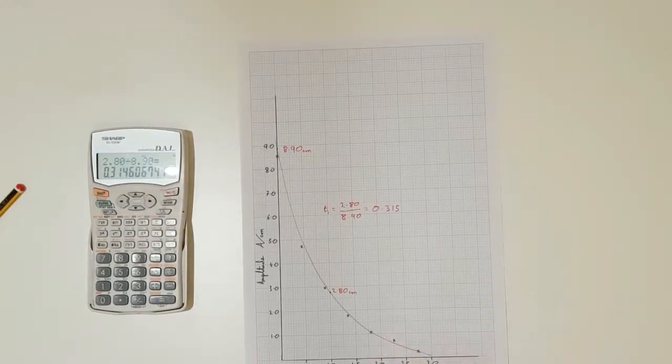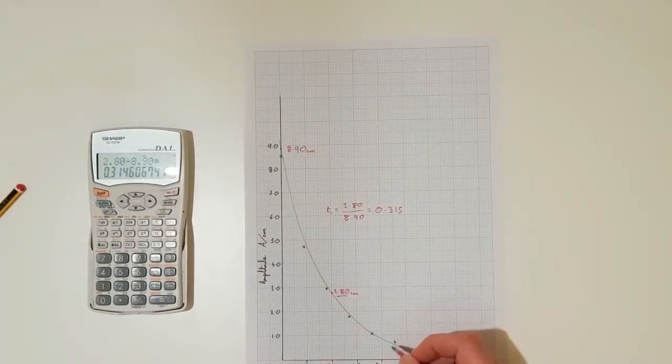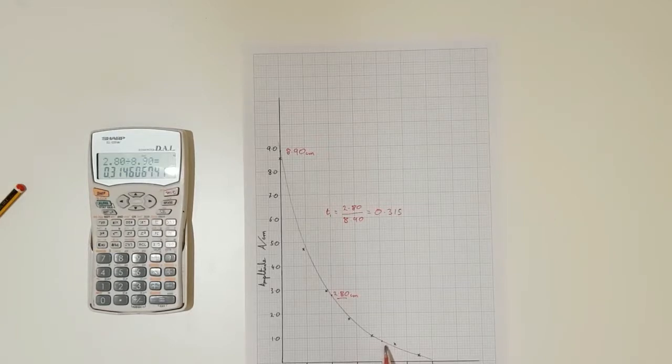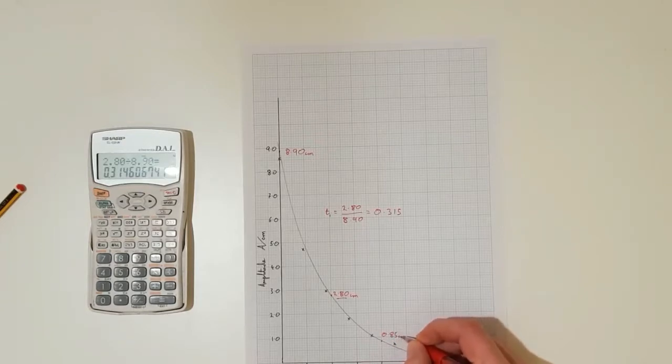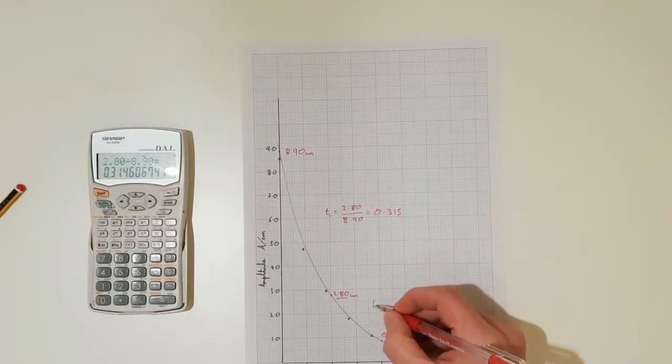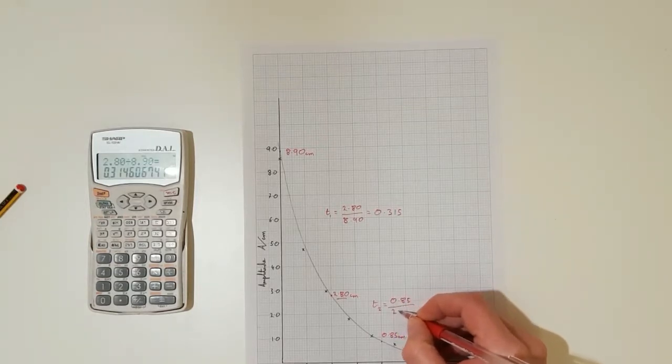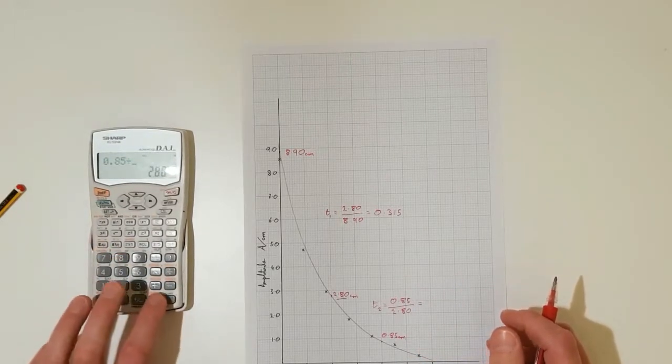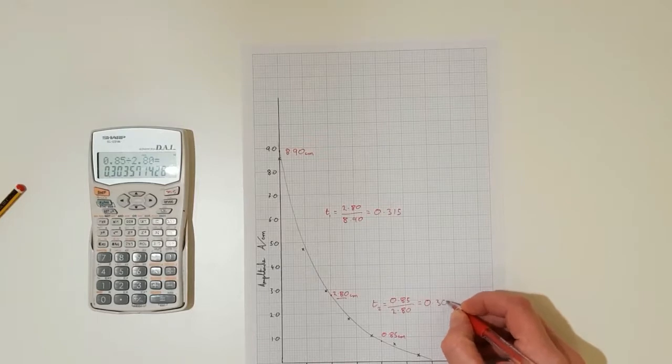I am now going to compare another fractional decay over an equal time interval. So I will start with 2.80 because I have already recorded that, and I will see what the amplitude is one second later, which is here. We can see the amplitude here is about 0.85. Again, we'll have a look at the fractional decrease from here to here, and we can see that T2 is 0.85 divided by 2.80, and we can see it's fairly similar at 0.304.